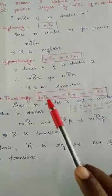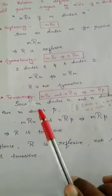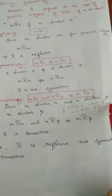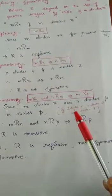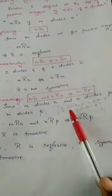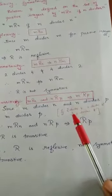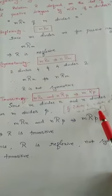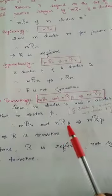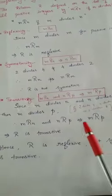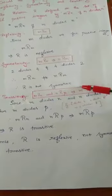For transitivity, the definition is: M related to N and N related to P implies M related to P. Since M divides N and N divides P, then M divides P. For example, considering three positive integers 2, 4, and 8 — 2 divides 4 and 4 divides 8, so 2 divides 8. From this we can write M related to N and N related to P implies M is related to P. Hence R is transitive.